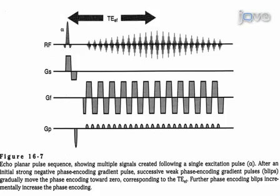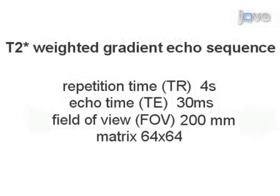Acquire functional scans with a T2-weighted gradient echo sequence with a repetition time, or TR, of 4 seconds and an echo time, or TE, of 30 milliseconds, field of view or FOV 200 mm, matrix 64 by 64, and flip-angle 90.